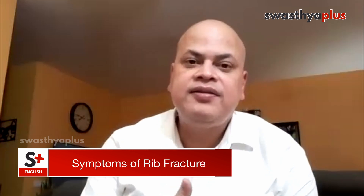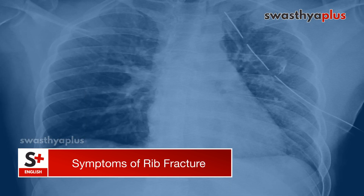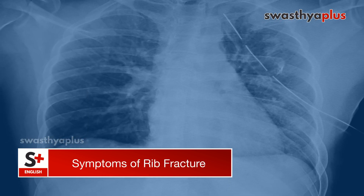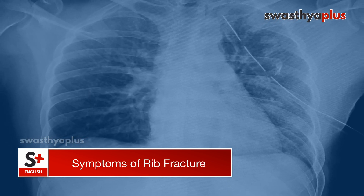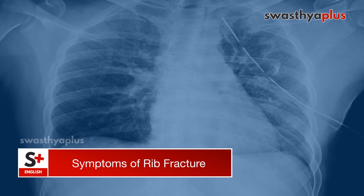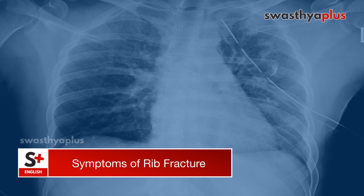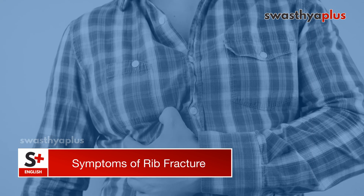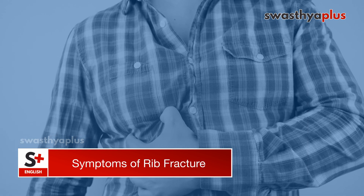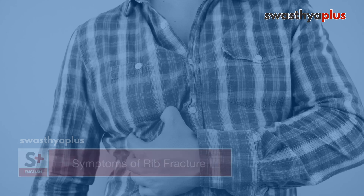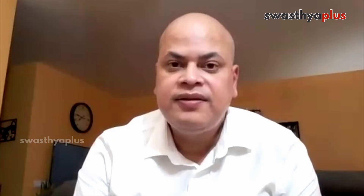The first thing is if there is a history of direct trauma or indirect trauma hitting the chest wall, causing pain there. So that's the first thing — pain, localized pain, tenderness. By touching the ribs, the pain is increased.